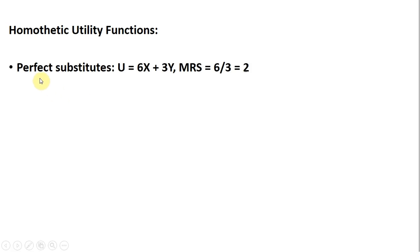Let's look at some homothetic utility functions. In the case of perfect substitutes, the utility function is homothetic. The marginal rate of substitution is the marginal utility of good x divided by the marginal utility of good y, which equals 2 and will always be 2. We can double our consumption bundle and the MRS will still remain at 2.